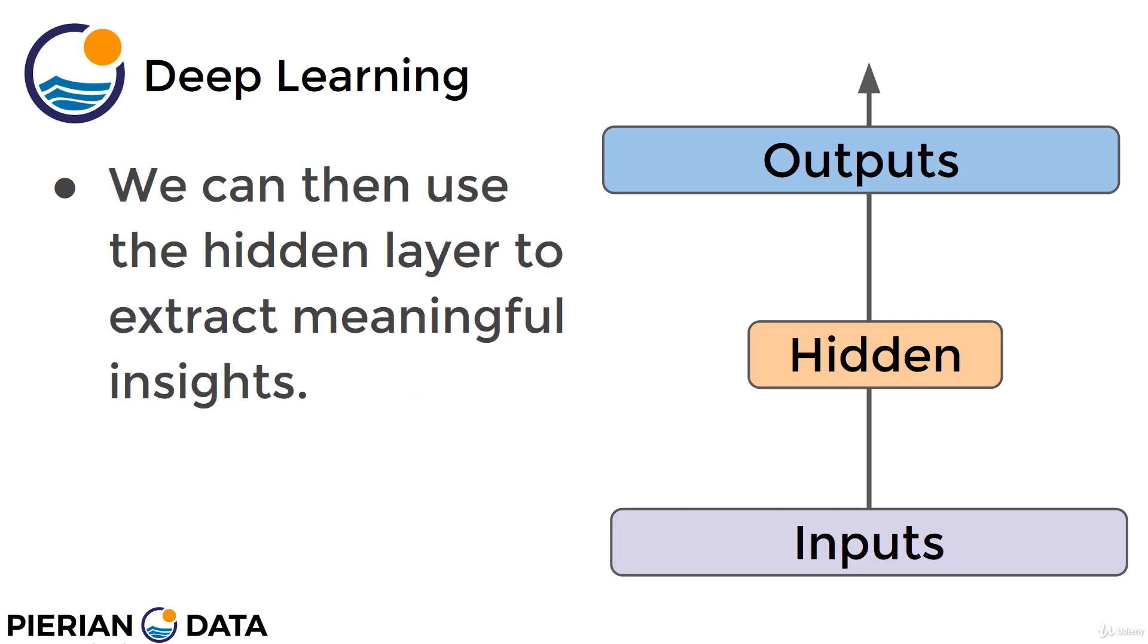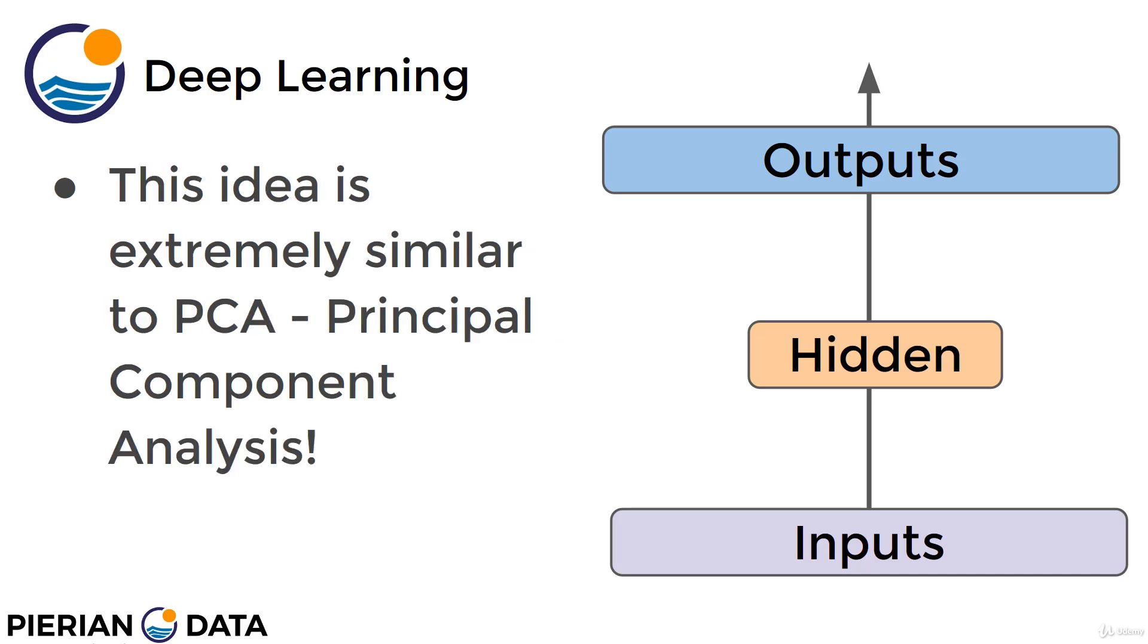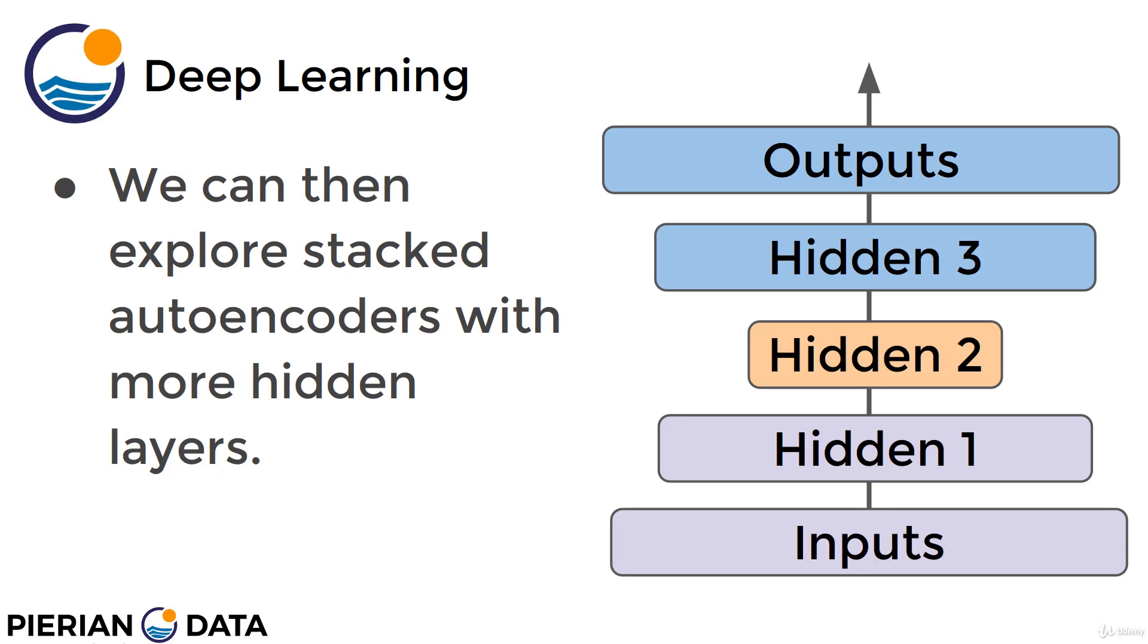And then later on, we'll see how we can actually take advantage of that hidden layer to extract meaningful insights. So when we do things like dimensionality reduction, we'll actually be able to train a full autoencoder and then split it in half and directly extract results from that middle hidden layer. But the full autoencoder is actually inputs shrunken down to hidden and then expanded back out to outputs. This idea is actually extremely similar to principal component analysis. We are trying to reduce the dimensionality into a few principal components. And keep in mind, we can explore stacked autoencoders with more hidden layers.